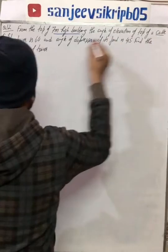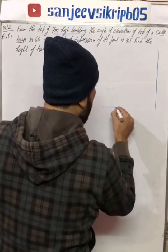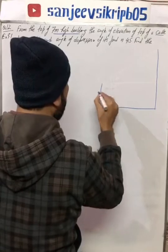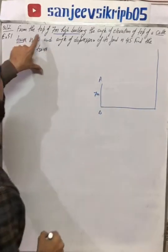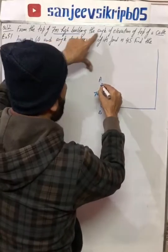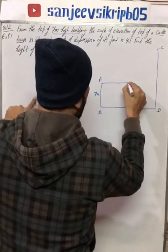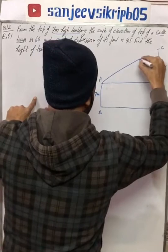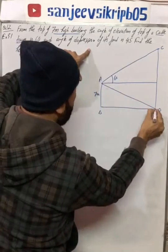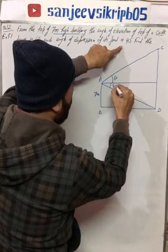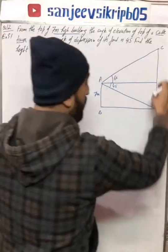So that means we are given two buildings: one is a seven meter high building, the other is a cable tower. Let's draw the diagram so that it will be more clear to you. Let this be the tower and the other side is the seven meter high building. Let's take this as AB, the seven meter high building. From the top of the seven meter high building, that is from point A, the angle of elevation of the top of the cable tower is 60 degrees, and the angle of depression of the foot of the cable tower is 45 degrees. That means we have two angles, 60 and 45. We need to find the height of the tower, which means we need to find CD.